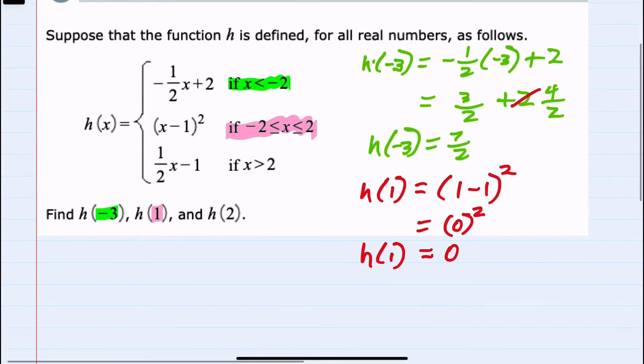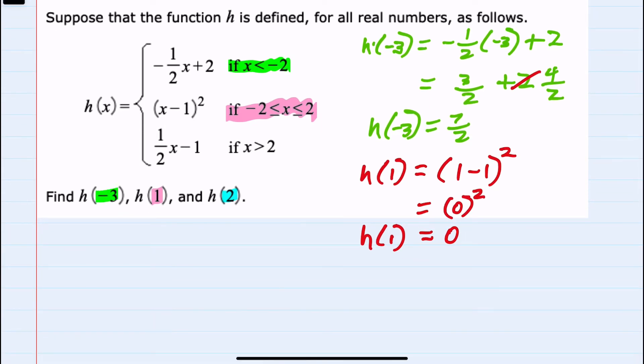And lastly, we have h of 2. And here we notice that for the last piece, that's only to be used if x is greater than 2. And since here x is 2, it actually falls into the middle piece here, because the inclusion part includes 2.